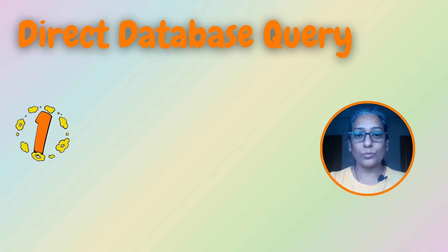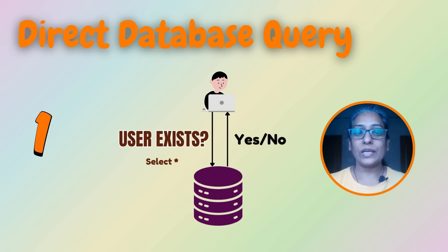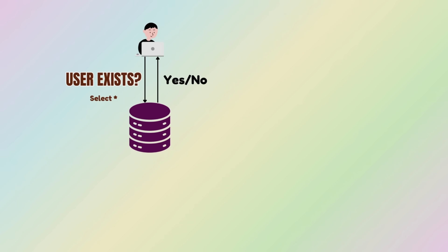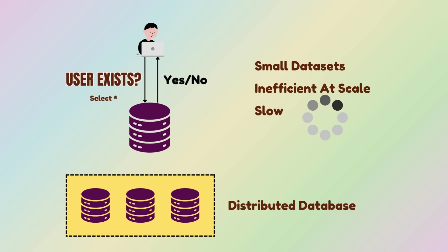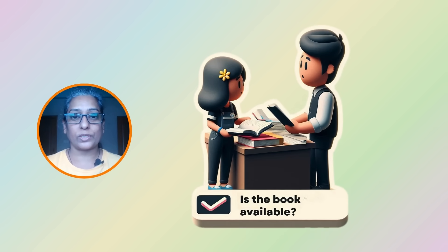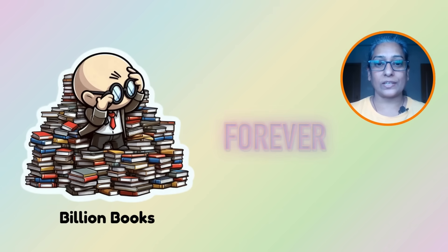First, the most straightforward solution: querying the database directly to check if a user exists. This approach works well for smaller databases but becomes inefficient as the number of users grows. The database query can be slow, especially if the database is distributed across multiple servers or if the index is large. This approach is like asking a librarian for a specific book — they check the records and let you know if it is available. But if your library has billions of books, that search can take a while.